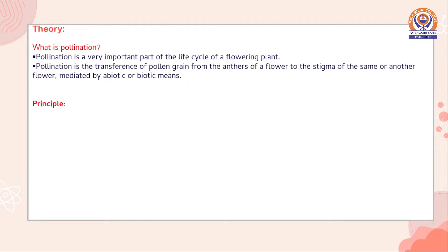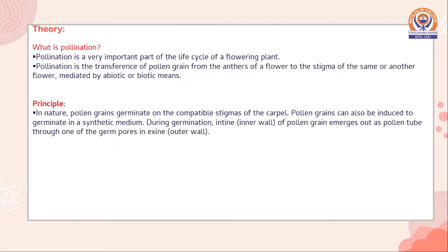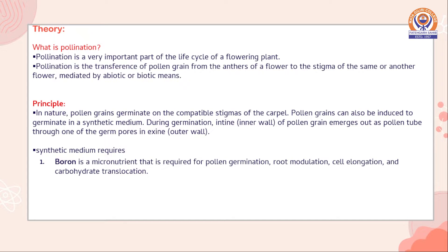The principle of this experiment is that in nature, pollen grains germinate on the compatible stigma of a carpel. Pollen grains can also be induced to germinate in synthetic medium. During germination, the intine of the pollen grain emerges out as a pollen tube through one of the germ pores in the exine, i.e. the outer wall. The synthetic medium includes boron, which is a micronutrient required for pollen germination, root nodulation, cell elongation, and carbohydrate translocation.